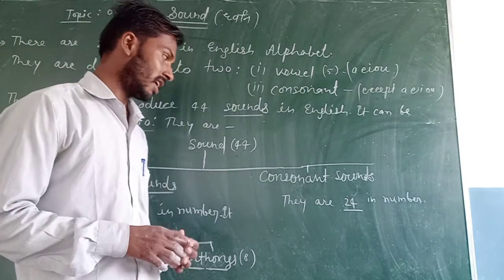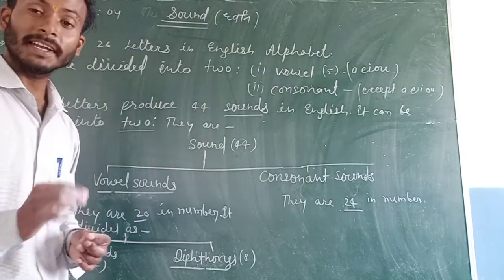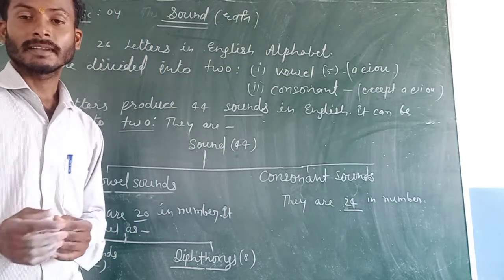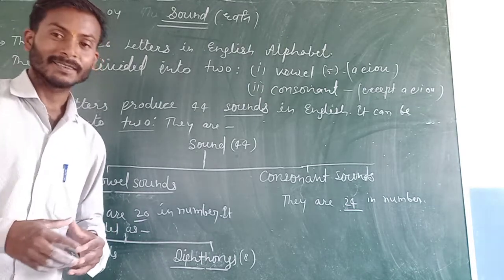Consonant sounds, they are 24 in number. So 20 and 24 make 44.